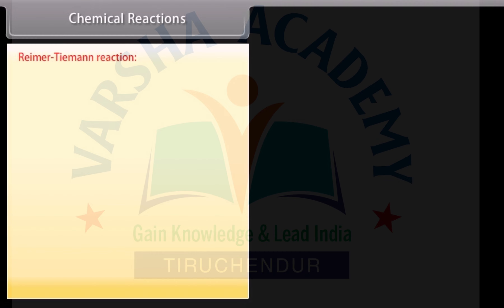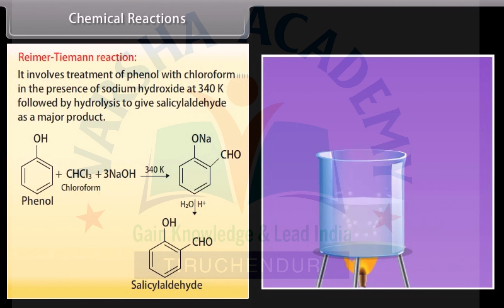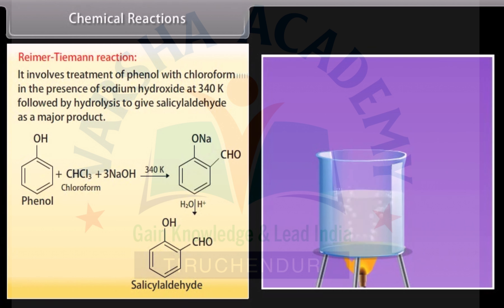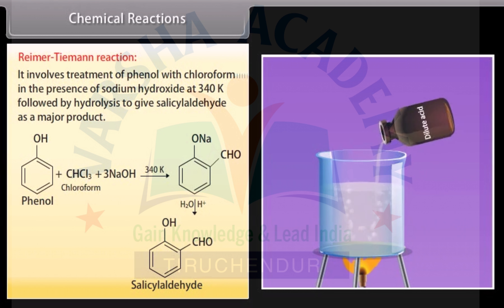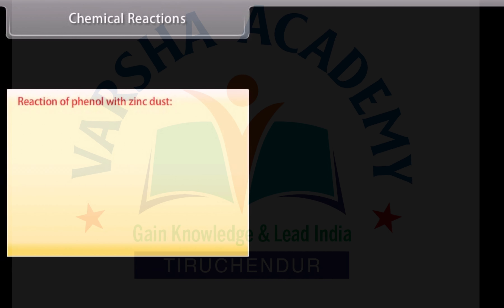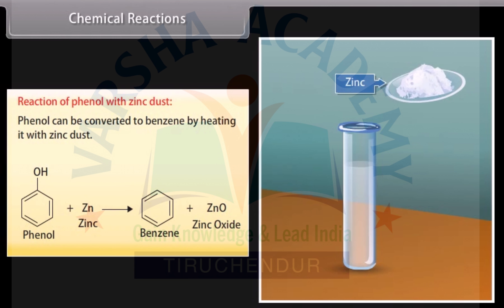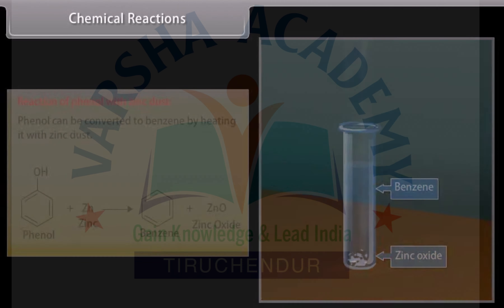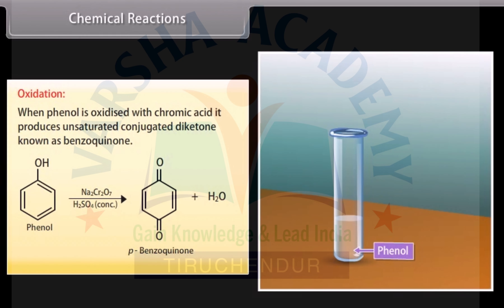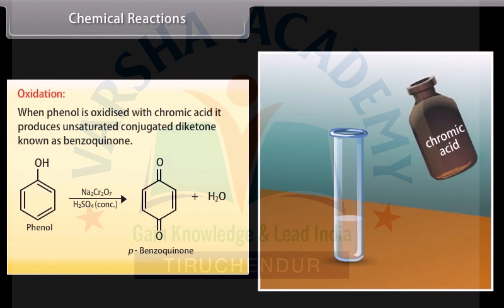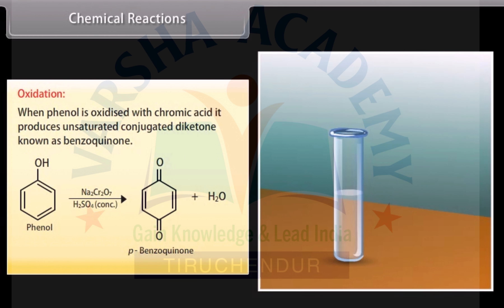Reimer-Tiemann reaction: it involves treatment of phenol with chloroform in the presence of sodium hydroxide at 340 Kelvin, followed by hydrolysis, to give salicylaldehyde as a major product. Reaction of phenol with zinc dust: phenol can be converted to benzene by heating it with zinc dust. Oxidation: when phenol is oxidized with chromic acid, it produces an unsaturated conjugated diketone known as benzoquinone.